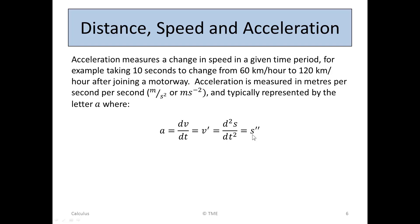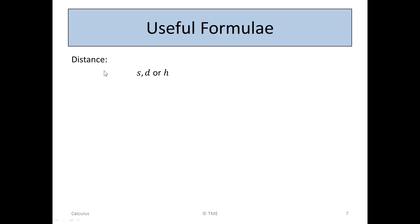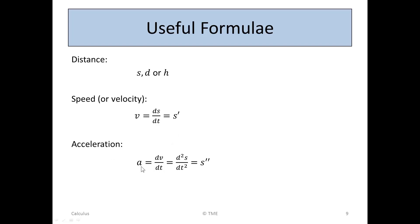So we go from distance; distance per time is velocity; and a change in distance per time, or a change in velocity, is acceleration. The useful formulas are: distance — either s, d, or h; speed or velocity given as v = ds/dt or s′; and acceleration given as a = dv/dt = d²s/dt², or s″. The measurement units: distance in meters, speed in meters per second, and acceleration in meters per second squared.